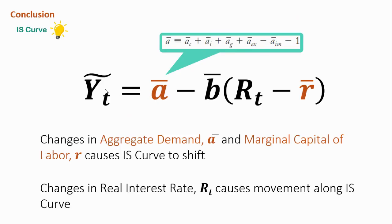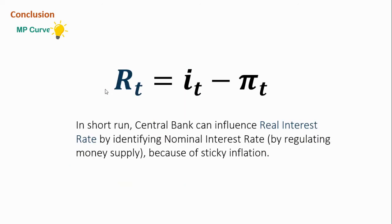In conclusion, any changes in aggregate demand shocks and MPK cause the IS curve to shift left or right, while any changes in interest rate cause movement along the IS curve. The central bank can influence the real interest rate by targeting the nominal interest rate through regulating money supply. This is possible because of the assumption that inflation is sticky in the short run.